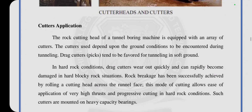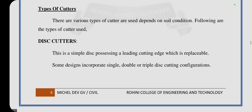Cutter applications: the rock cutting head of the Tunnel Boring Machine is equipped with an array of cutters. In hard rock conditions, the disc cutters wear off quickly and can rapidly become damaged. This mode of cutting allows the application of very high thrust and progressive cutting in hard rock conditions. Such cutters are mounted on heavy-capacity housings. The type of cutter used depends on the soil conditions.